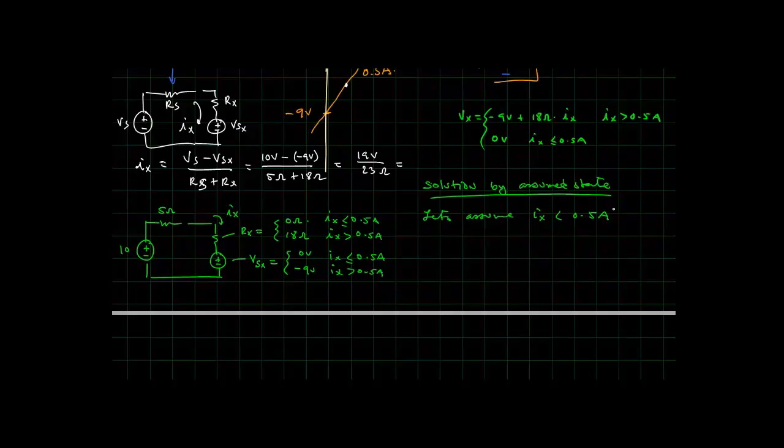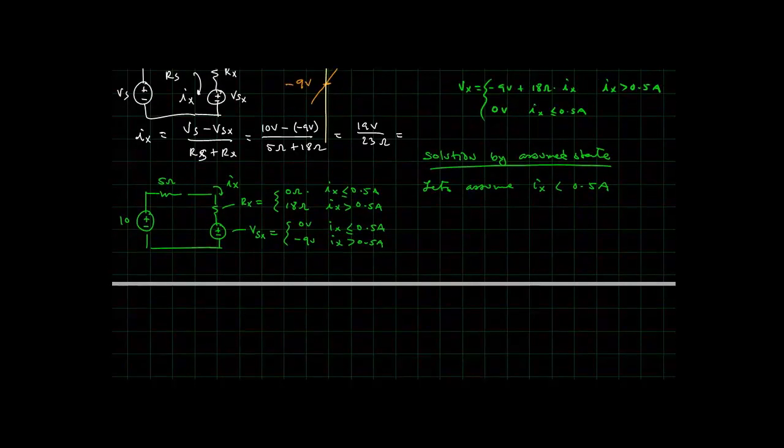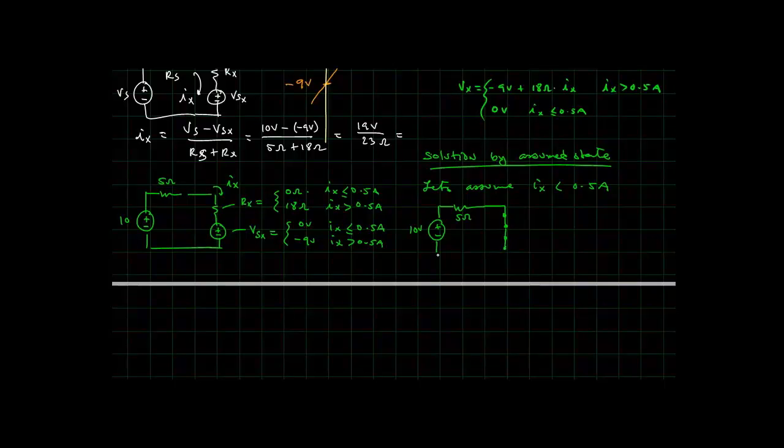Let's assume that Ix is going to be less than 0.5. You just guess. Hopefully, you can make an educated guess. I've intentionally here made a bad guess because I want to show how if you choose the wrong thing, you can still solve the problem accurately, properly. If we assume it's less than 0.5, then that means Rx is 0, which means we have a short, and Vsx is also 0. Ix now is simply 10 volts over 5 ohms, which is 2 amps. But Ix is greater than 0.5 amps, therefore we chose, or we guessed wrong, we chose the wrong state.